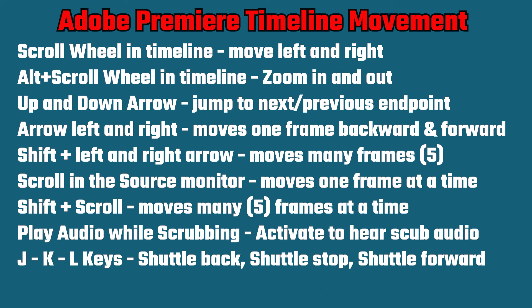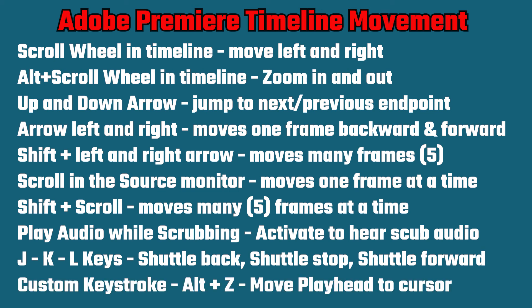The J, K, and L keys are shuttle back, shuttle stop, and shuttle forward. Shift J and shift L are shuttle back slow and shuttle forward slow. And then the custom keystroke Alt-Z moves the playhead to cursor.